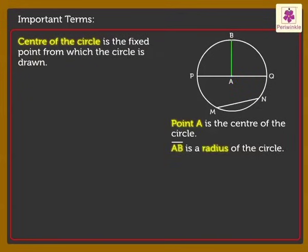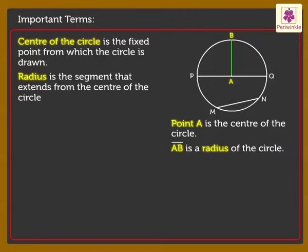Line segment AB is a radius of the circle. Radius is the segment that extends from the center of the circle to any point on the circle.